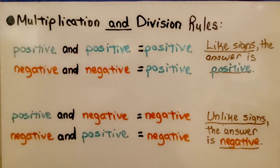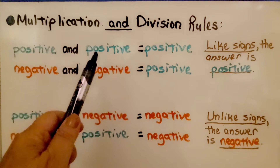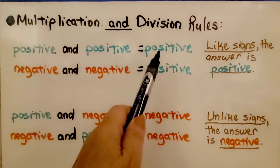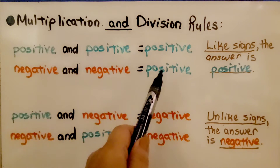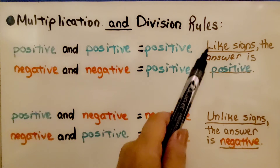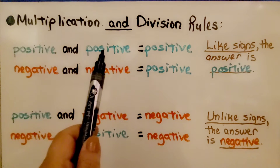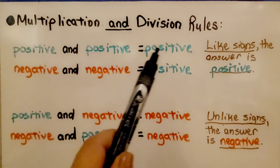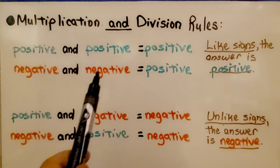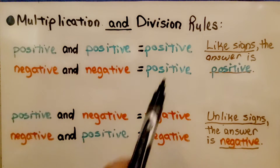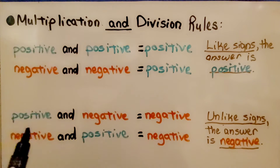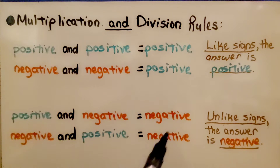Let's remember the multiplication and division rules. If we have a positive and a positive, it is going to equal a positive. If we have a negative and a negative, it will equal a positive — that's because they have like signs. But when we have unlike signs, our answer will be negative.